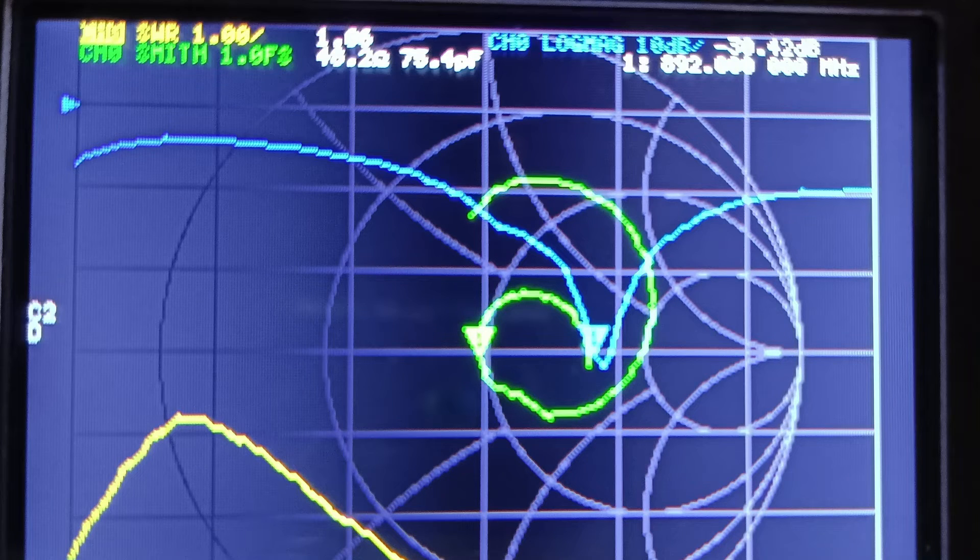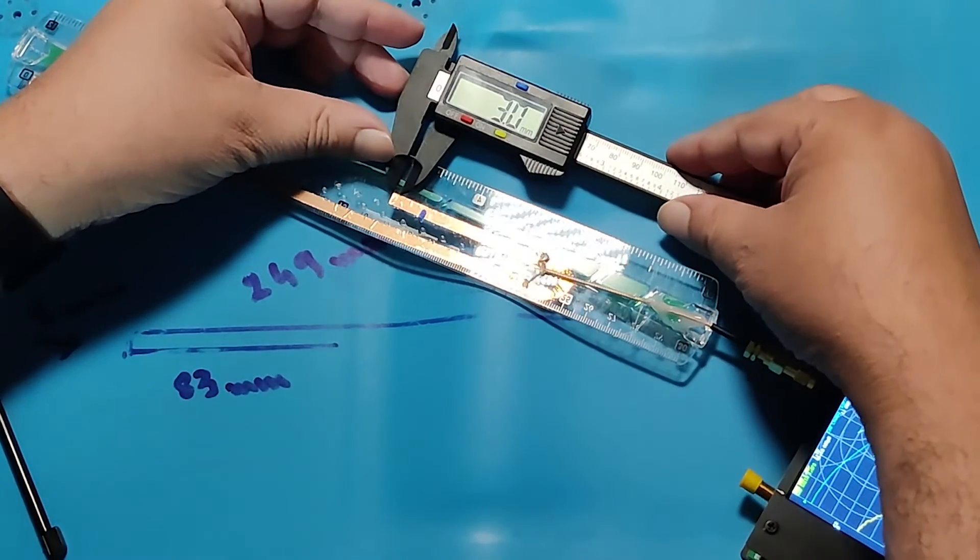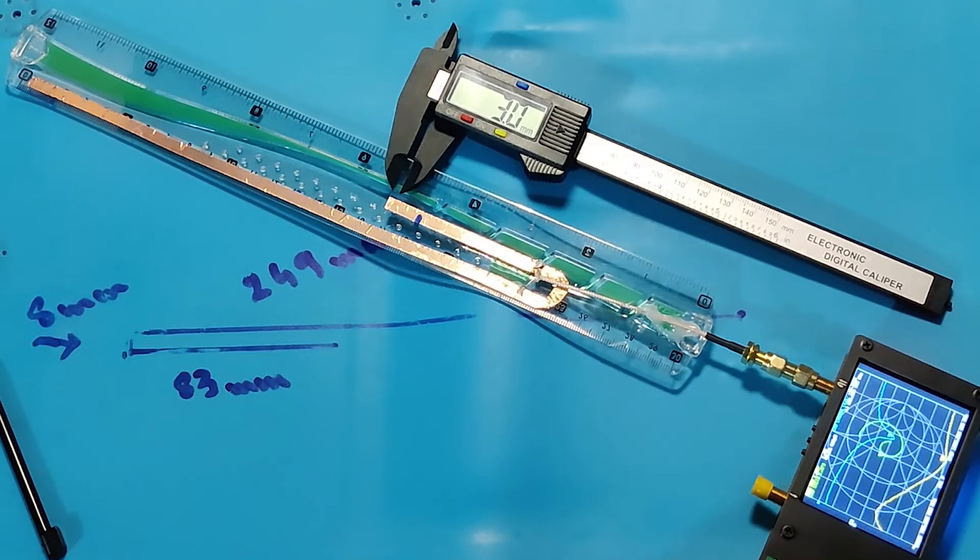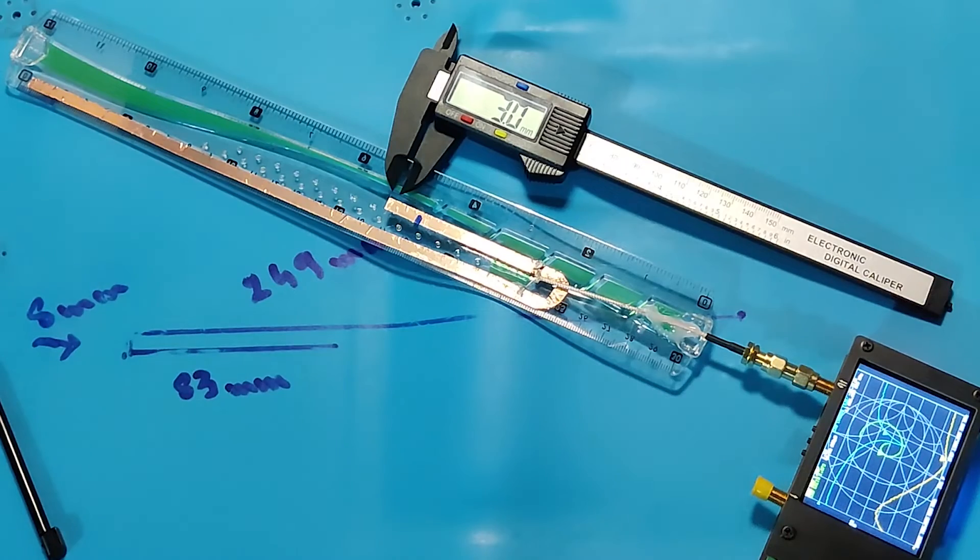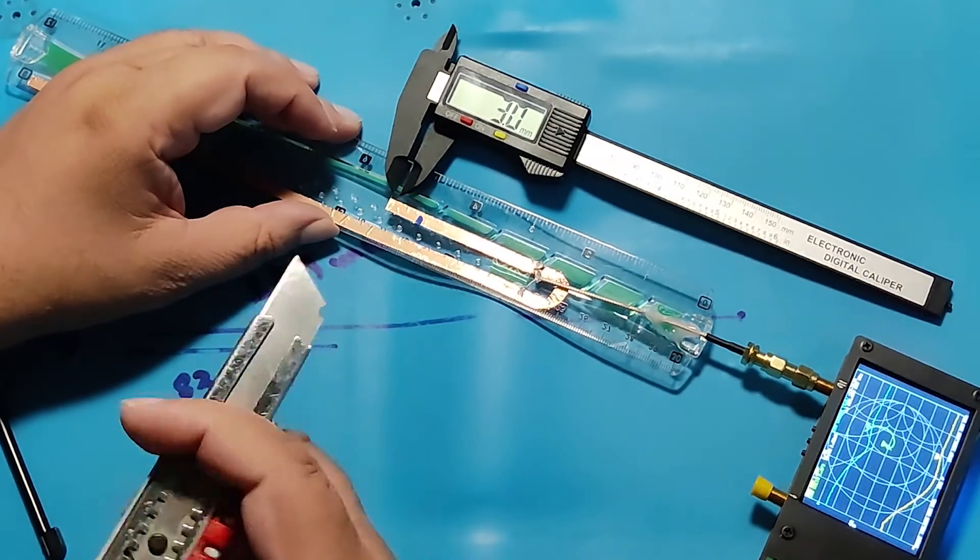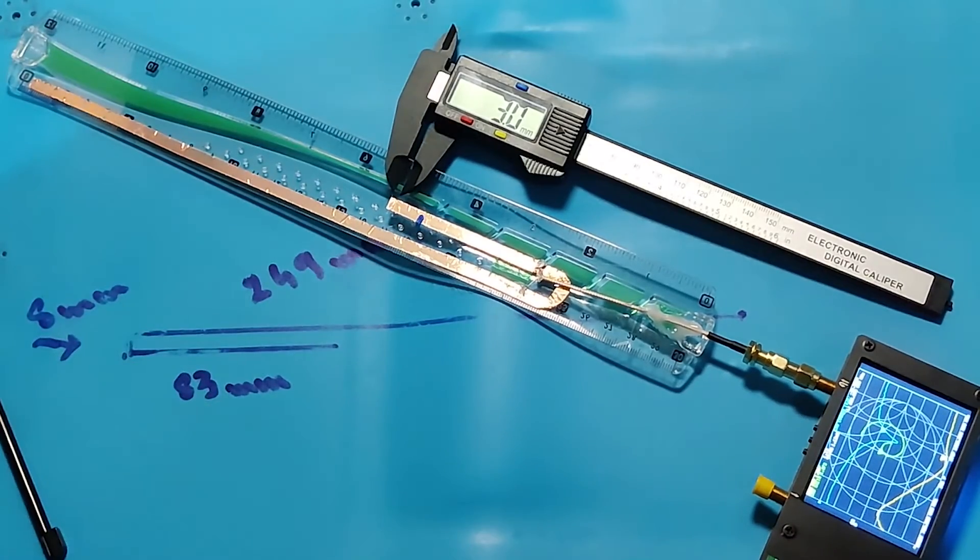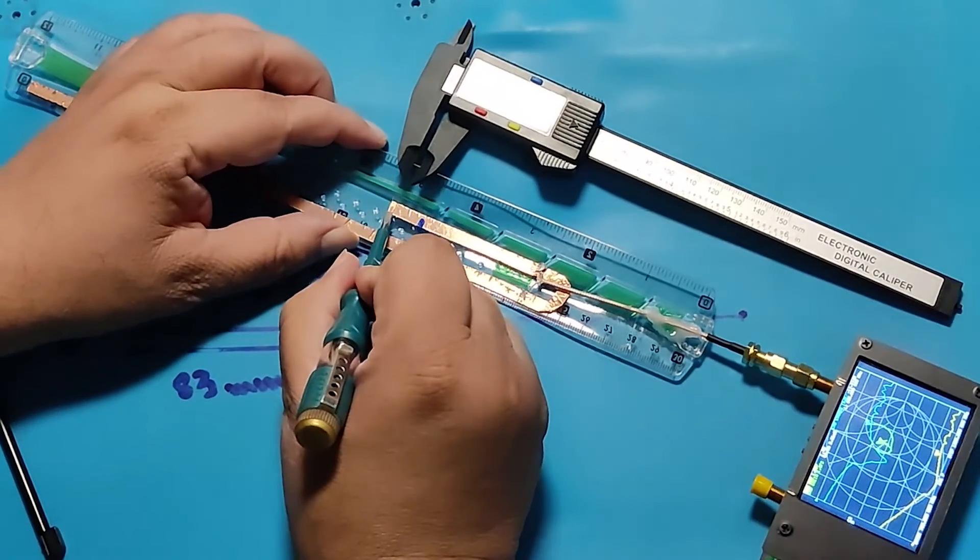Now we see that the resonant frequency moves upward to 892 MHz. It is an indication that our conductor is shorter than the resonant length. But before going ahead and increasing the length of the main conductor, I would like to cut the shorter side by 2 mm to see if the antenna resonates.